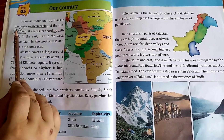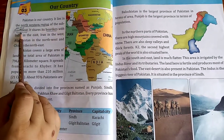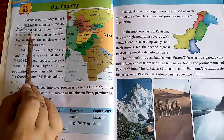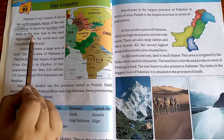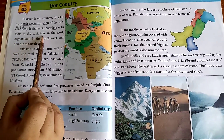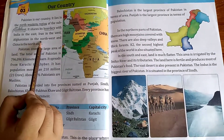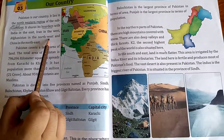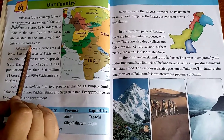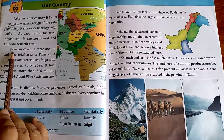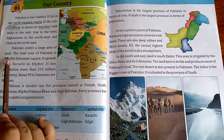Pakistan lies in the north-western region of the subcontinent. It shares its border with India in the east, Iran in the west, Afghanistan in the north-west, and China in the north-east. Pakistan covers a large area of land.